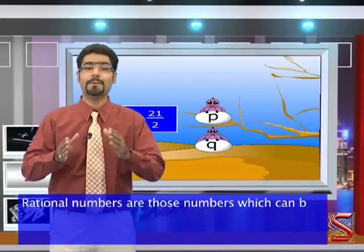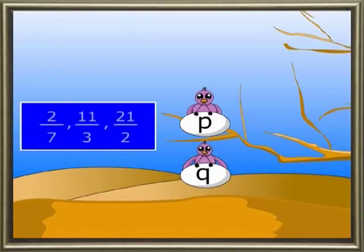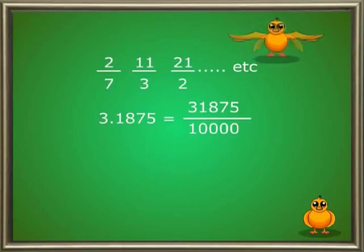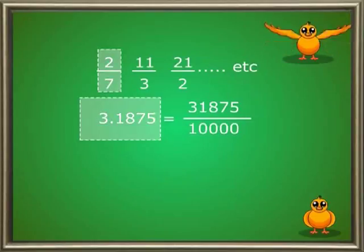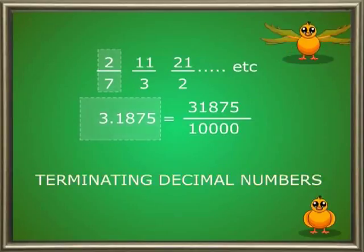Rational numbers contain integers and fractions — that is, decimal numbers, both of them. Rational numbers are those numbers which can be represented in the form of p by q, where p and q both have to be integers. These types of fractions or decimal numbers fall in the category of rational numbers. Numbers of the type 2 by 7 or 3.1875 are terminating decimal numbers — they have finite decimal places. This type of numbers are called terminating decimal numbers.